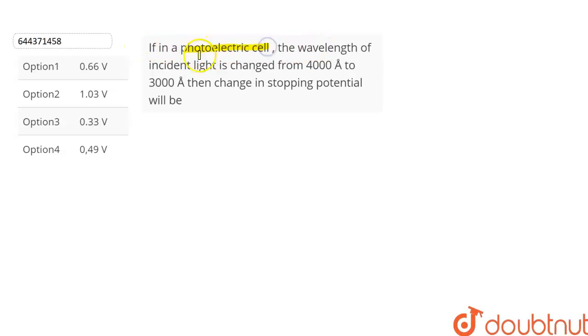The question is: if in a photoelectric cell the wavelength of incident light is changed from 4000 angstrom to 3000 angstrom, then we have to find the change in stopping potential. We are given four options from which we have to choose the correct option. Let's find out.